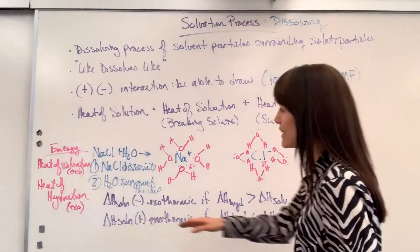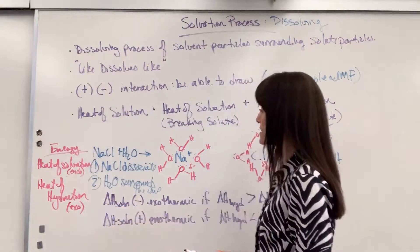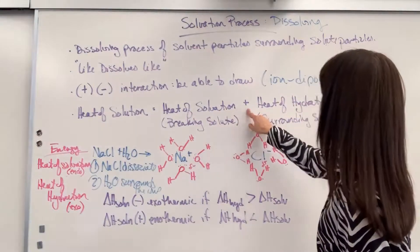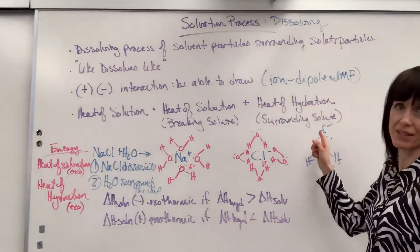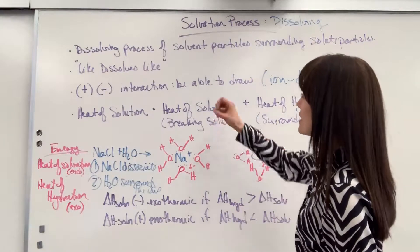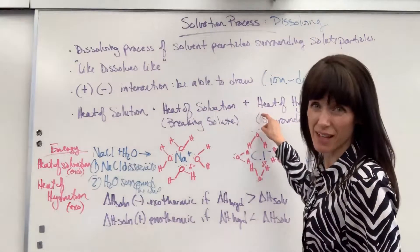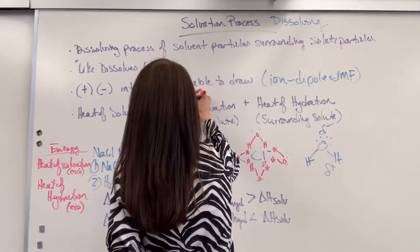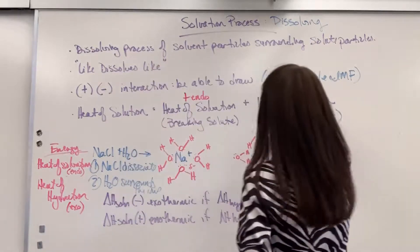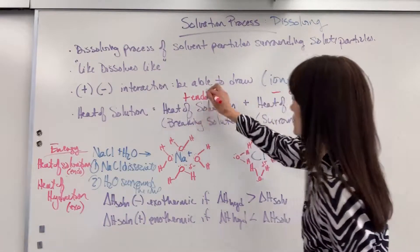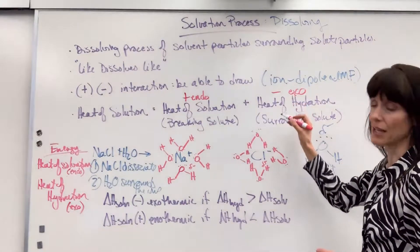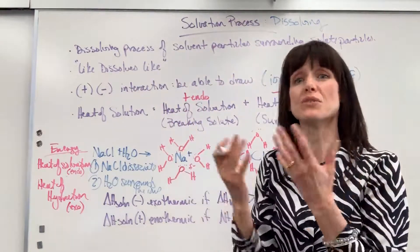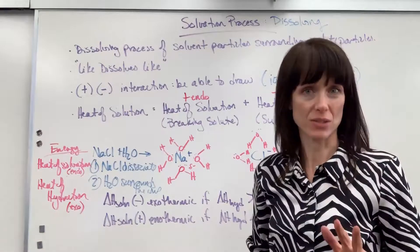Now, the overall heat of the solution is simply going to be the heat of solvation — breaking the solute — plus the heat of hydration surrounding the solute. So the amount of energy it takes, add that to that negative energy released — this is positive endothermic, this is negative exothermic. You take that positive delta H plus that negative delta H, and whatever sign you get at the end tells you if the overall solution is endothermic or exothermic.